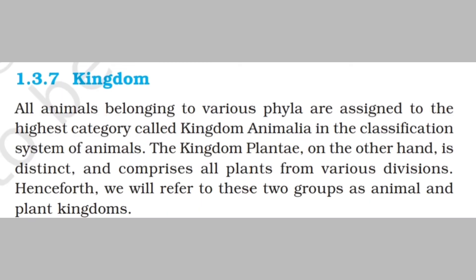The topmost highest rank is Kingdom. All animals belonging to various phyla are assigned to the highest category called Kingdom Animalia, while Kingdom Plantae includes various divisions in the case of plants. Henceforth, we will refer to these two groups as the animal and plant kingdoms.